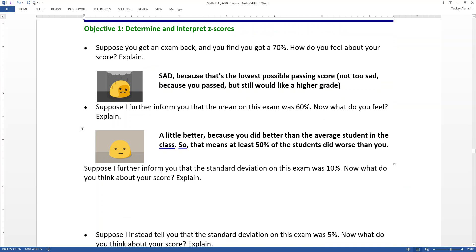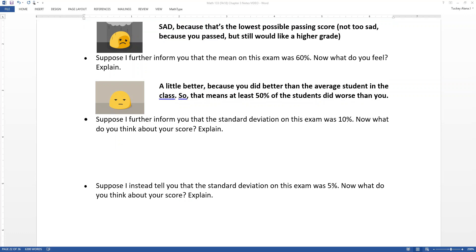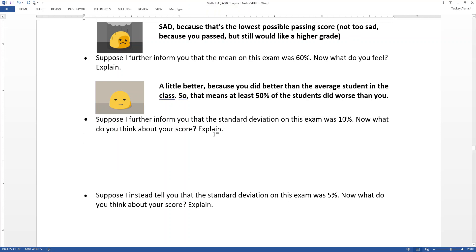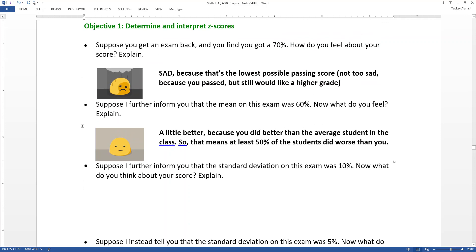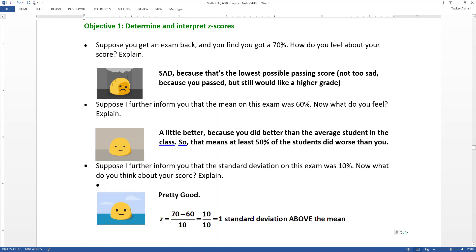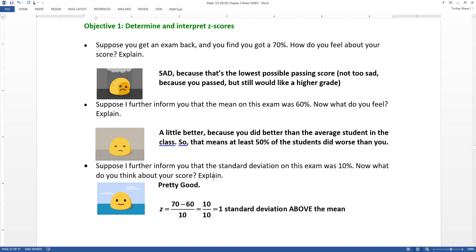Now, here's where the real trick becomes. What if I tell you that the standard deviation on this class, on this exam was 10%? Well, now I'm thinking, hey, not only did I do better than at least 50% of the students, but I did even better than that. You know, I'm one standard deviation above the mean because I scored a 70, and the mean was 60, and the standard deviation was 10. I scored one standard deviation above the mean. That's not too bad at all, that's pretty good, in fact.